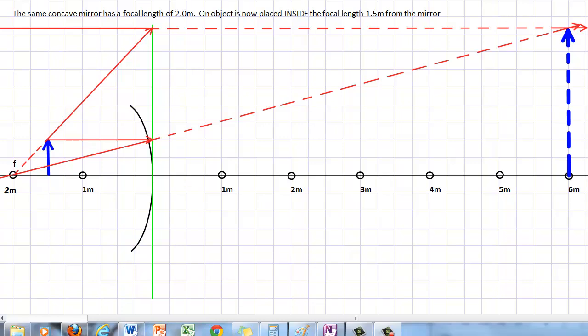Okay, now we see I've drawn in my image. It's upright. It's much taller than the original object, so the magnification must be bigger than positive 1 since it's upright. Notice I've drawn it in as a dotted line to represent the fact that it's virtual. Anything that's not a real ray, we have to dot it in. And we can actually figure out roughly the magnification.